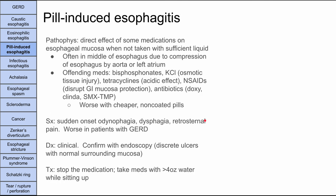Next is pill-induced esophagitis. The pathophysiology is the direct effect of a medication on the esophageal mucosa, usually when someone takes a pill with insufficient water. The pill typically gets caught in the middle of the esophagus, where the aorta or left atrium compresses it slightly, narrowing the lumen. Several medications are particularly problematic: bisphosphonates, potassium chloride (which causes osmotic tissue injury), tetracyclines (acidic), NSAIDs (which disrupt mucosal protection), and antibiotics like doxycycline, clindamycin, and Bactrim.